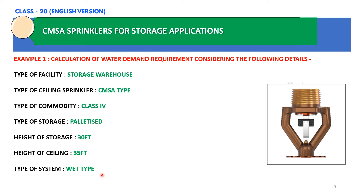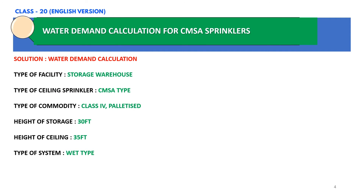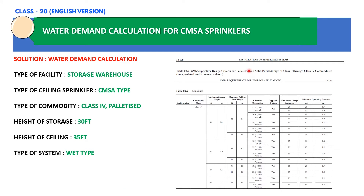All these details are provided and we need to calculate the water demand requirement for the CMSA type sprinklers based on NFPA 13. Based on the available data, we will refer to NFPA 13, the standard for installation of sprinkler systems. I have extracted table 22.2 of the 2019 edition of NFPA 13, which provides CMSA sprinkler design criteria for class 1 through class 4 commodities. From this table, we can find the K factor, the number of design sprinklers, and the minimum operating pressure for each sprinkler. The height of storage is 30 feet, ceiling height is 35 feet, system type is wet, and commodity type is class 4.